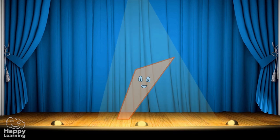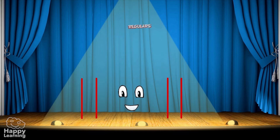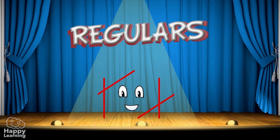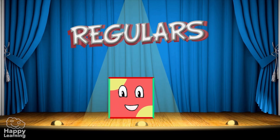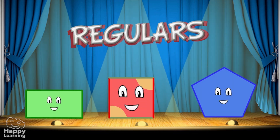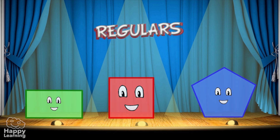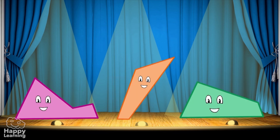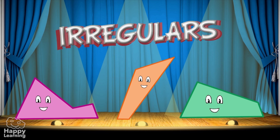The first classification is whether polygons are regular or irregular. A polygon is regular if all its sides and angles measure the same. In these images you can see regular polygons — the sides and angles are equal. These other polygons are irregular because their sides and angles are not equal.